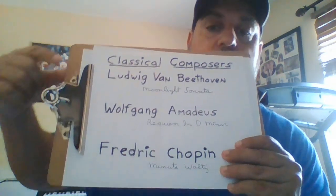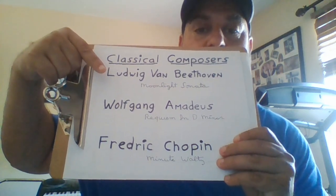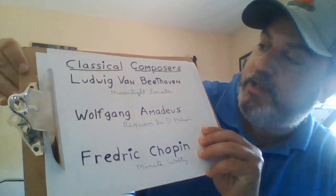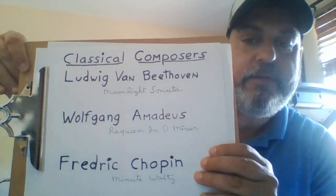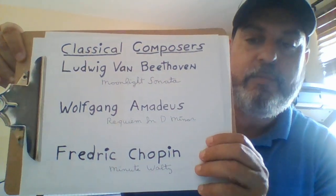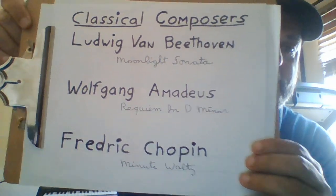Some of the great composers historically in classical music are the following. We have Ludwig von Beethoven, who is very famous for his Moonlight Sonata. We have Wolfgang Amadeus Mozart for his Requiem in D minor, and we have Frederic Chopin for the Minute Waltz, which I would like you to listen to — it's a great example of classical music. It's a very short piece but it may be familiar to some of you.